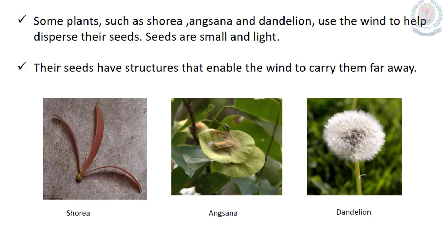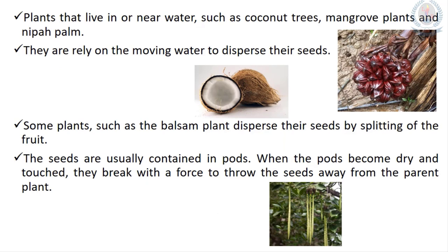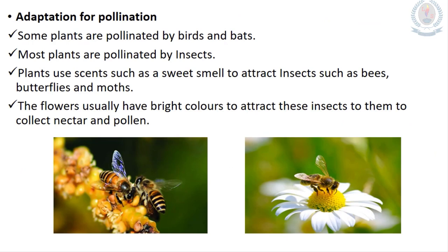Some plants such as shorea, acacia and dandelion disperse seeds through the wind — they have wing-like structures and very light, small bodies specially adapted to float in wind. Some plants such as coconut and mangrove disperse through water, having lightweight and fibrous-like structures. Balsam plants disperse seeds by splitting open the fruit — when the pods become dry and break, the seeds come out with force and spread away from the parent plant.